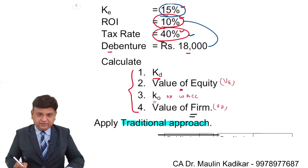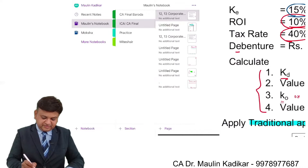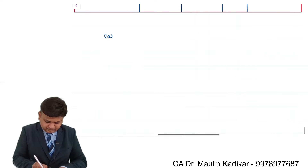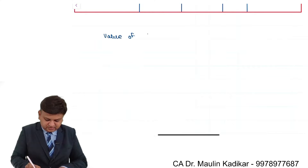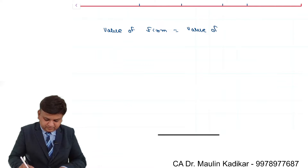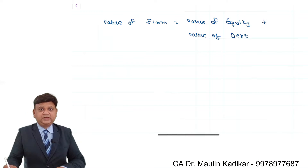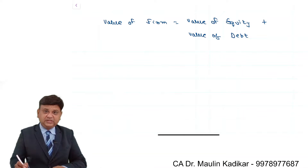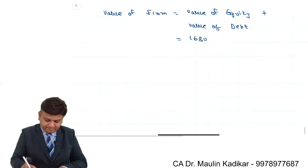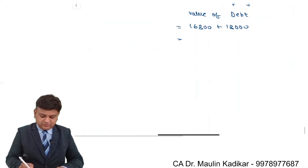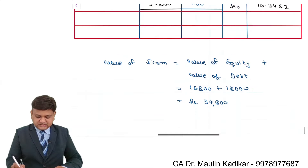The last question is calculation of the value of the firm. Value of firm is calculated as value of equity plus value of debt. The value of equity is 16,800 plus value of debt is 18,000, so it is 34,800. This is the way the value of the firm is calculated.